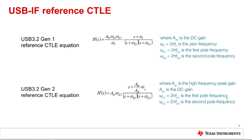The USB Implementers Forum, USBIF, is the organization which created the Universal Serial Bus and creates the USB specifications. The USB specification defines a reference CTLE to be used in compliance testing. This reference CTLE is implemented in software for transmitter testing and is used to establish recommended ranges for the equalizer parameters in a design. The reference CTLE equations shown here — one equation is defined for USB 3.2 Gen 1 and similarly defined for Gen 2. Although the specification defines the reference CTLE, it does not mandate the implementation of the equalizer, to allow design flexibility.